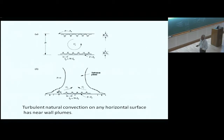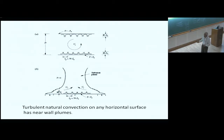My view is that convection on any horizontal surface is driven by near-wall plumes. On an isolated hot plate, far from the plate you have a turbulent plume, but near the surface, if the Rayleigh number is high enough, you get plumes just like in Rayleigh-Bénard convection. The outer flow is very different in different configurations, but near the wall it is identical.